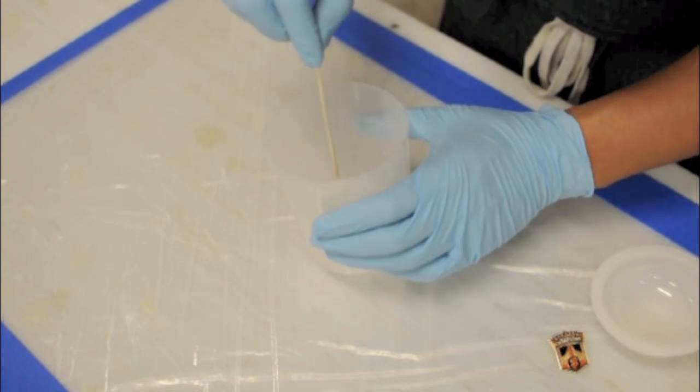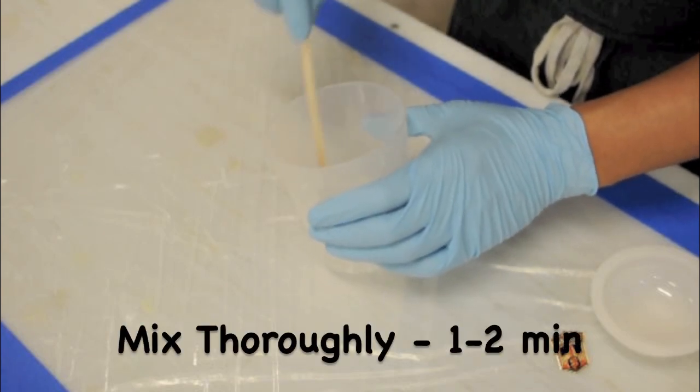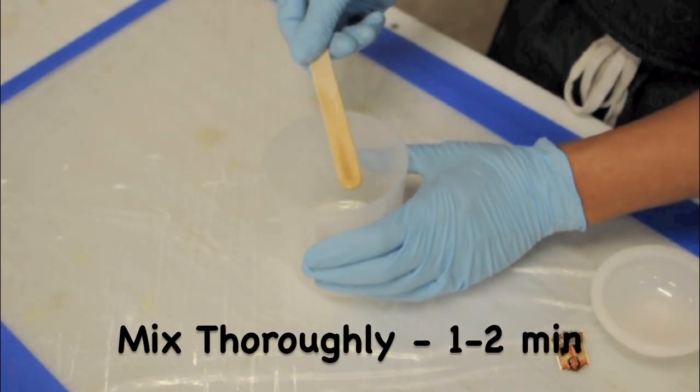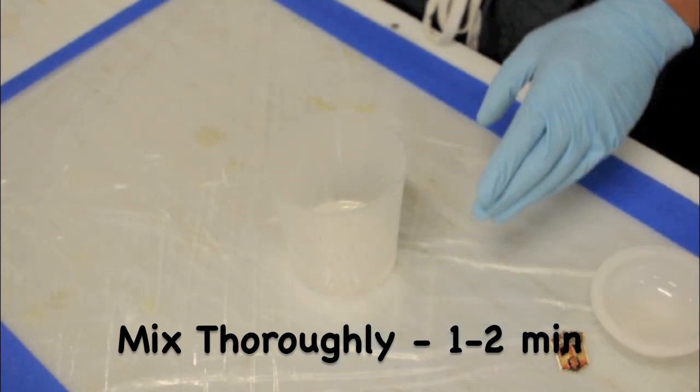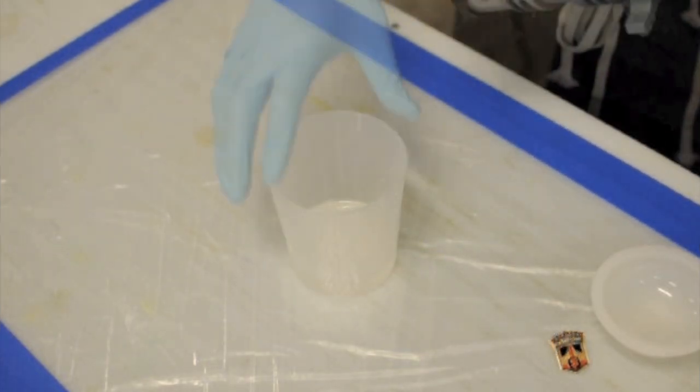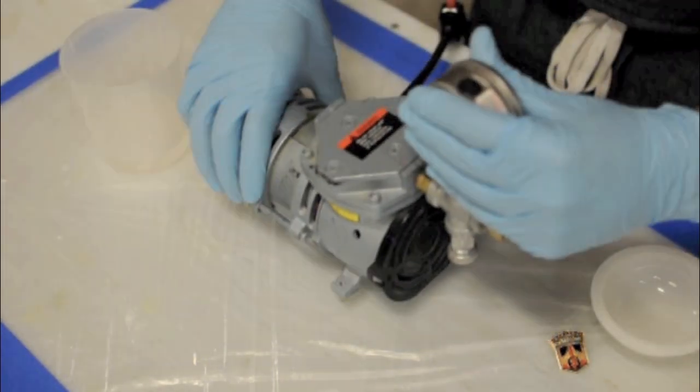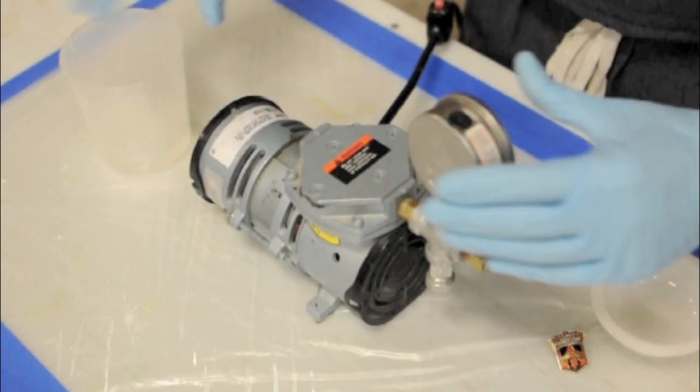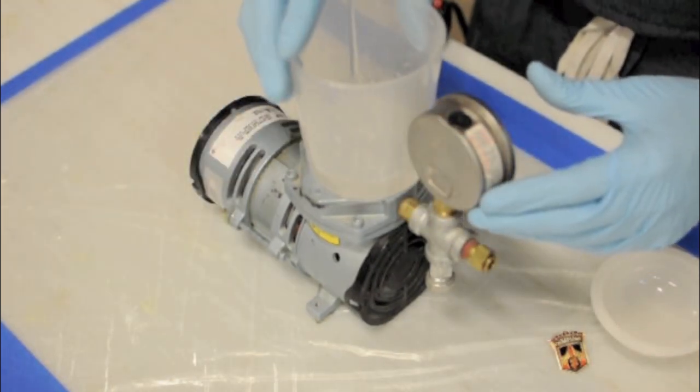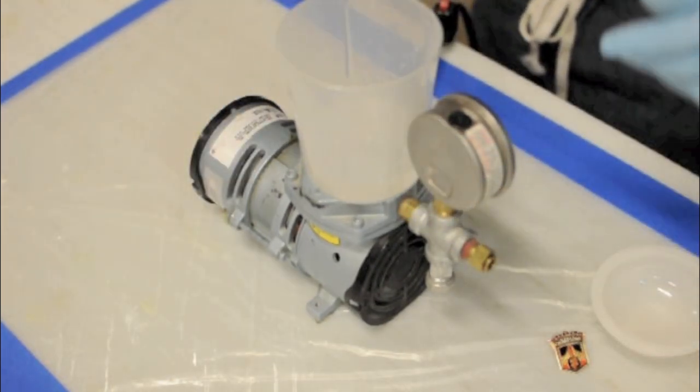Once you've properly measured out your two parts, be sure to mix them thoroughly, scraping the sides of your cups. When mixed thoroughly, you will introduce air bubbles into your resin, which for thin coatings should naturally be released. But for thicker coatings, you're going to want to actively degass your resin.